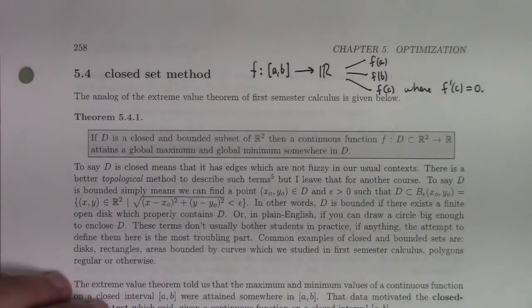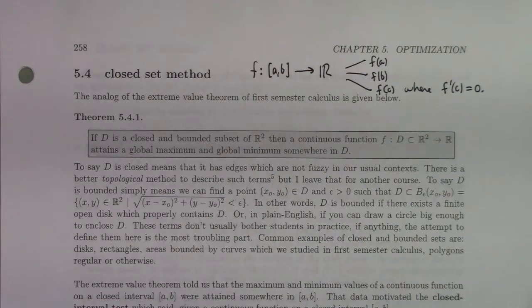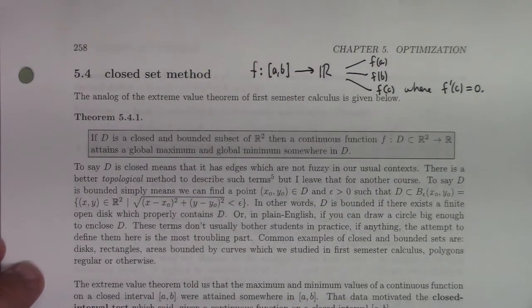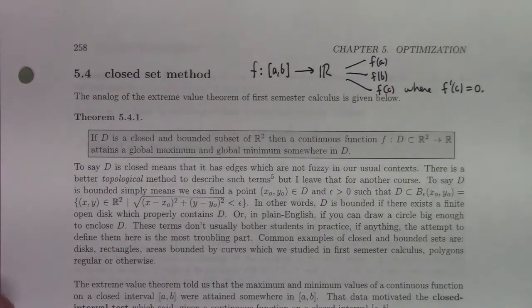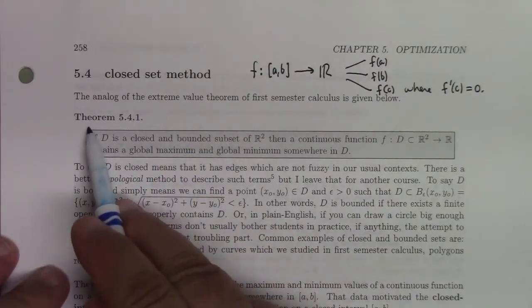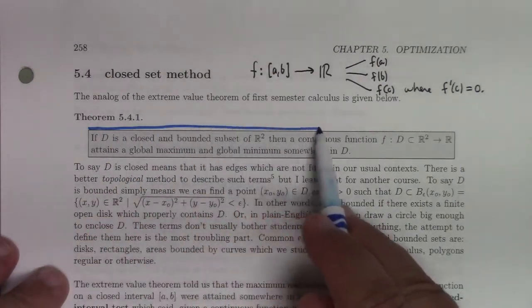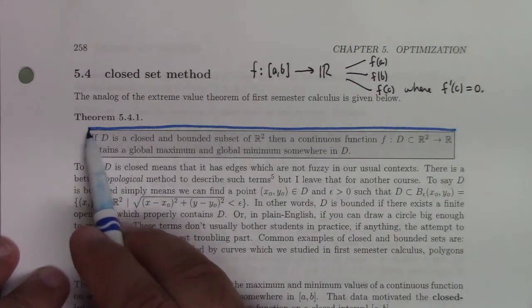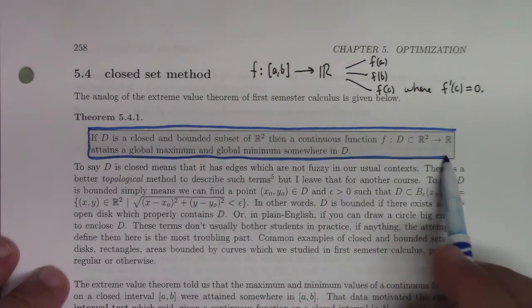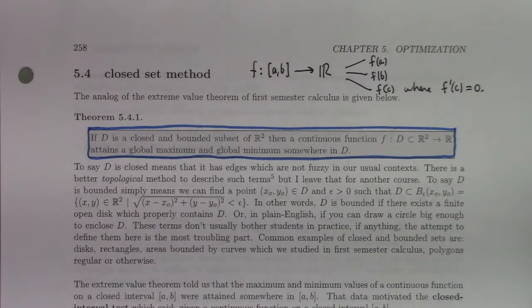We're essentially trying to do the same thing but instead of a closed interval, we have a closed set—a closed bounded subset of R2. Bounded means you can put a disk around it of sufficiently large size. If you have a continuous function on inputs from a closed and bounded subset of R2, that function will attain a global maximum and global minimum somewhere in D.